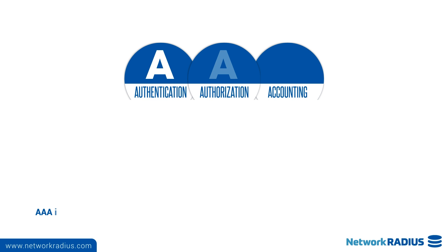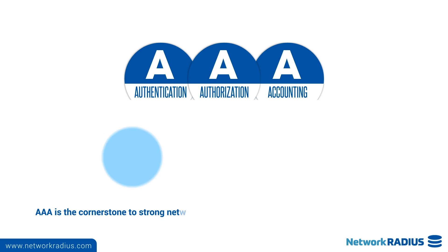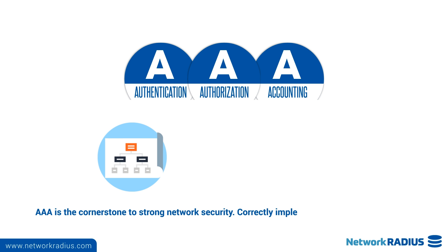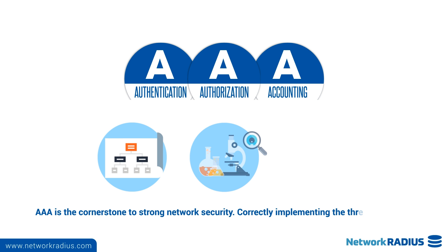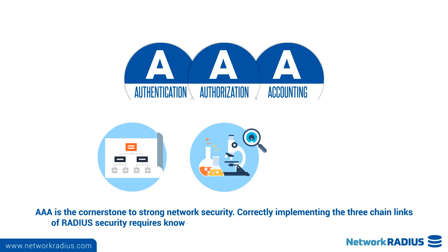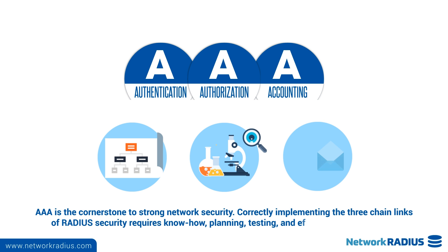AAA is the cornerstone to strong network security. Correctly implementing the three chain-links of Radius security requires know-how, planning, testing, and effective documentation.